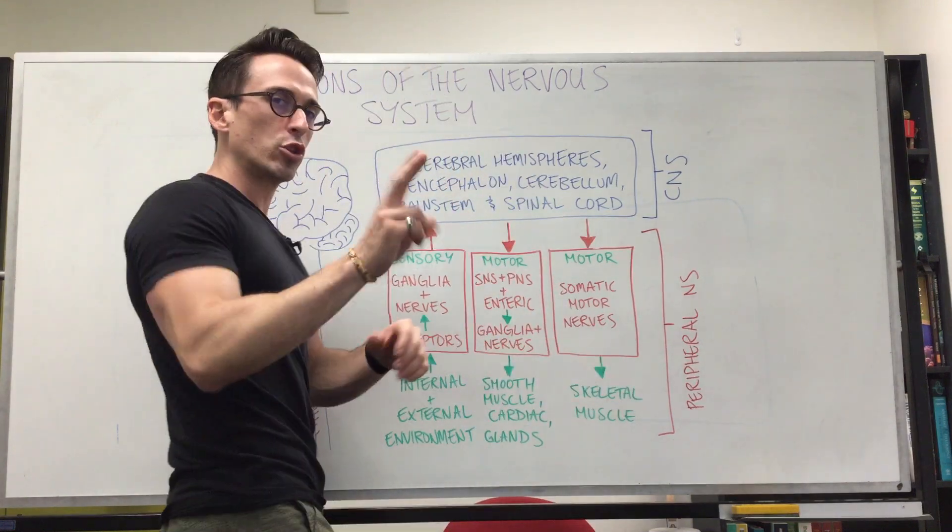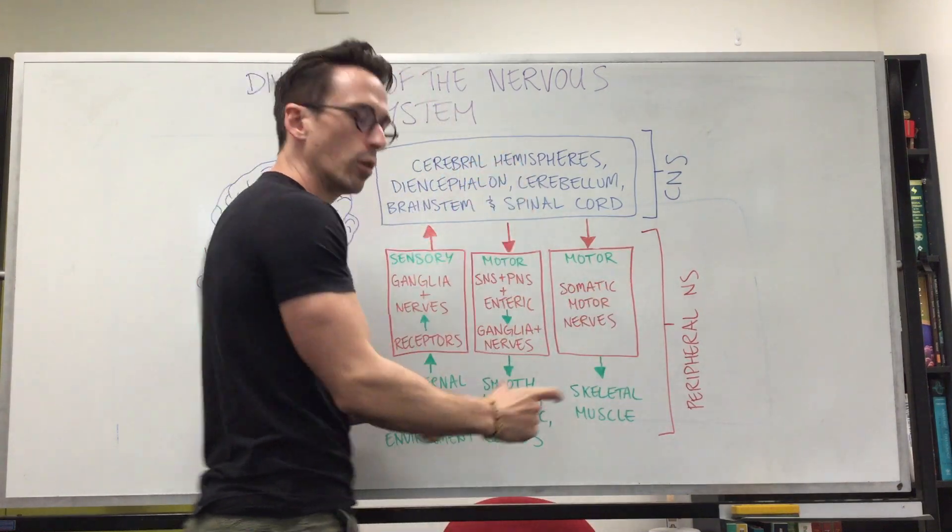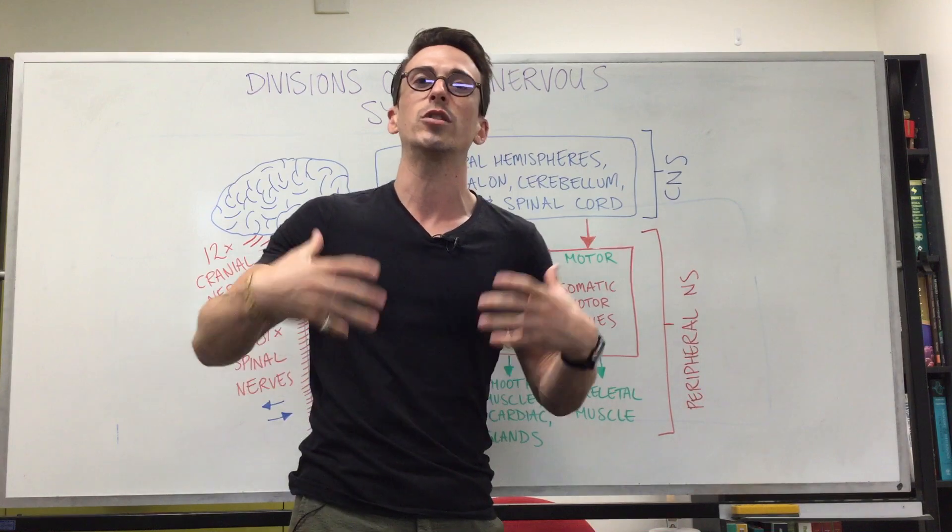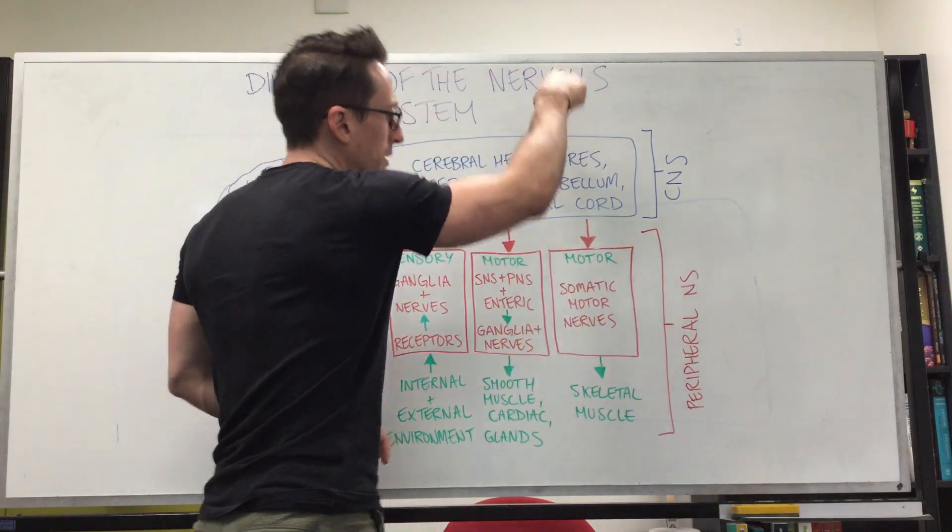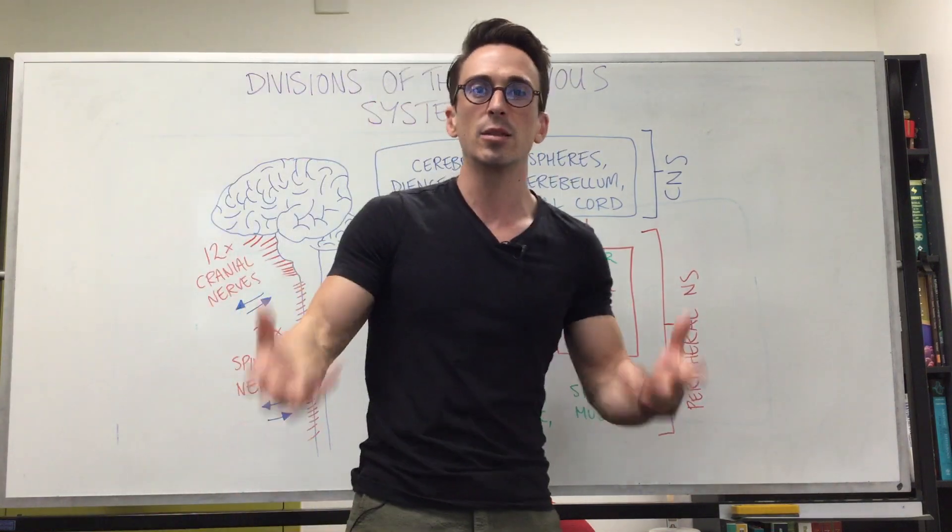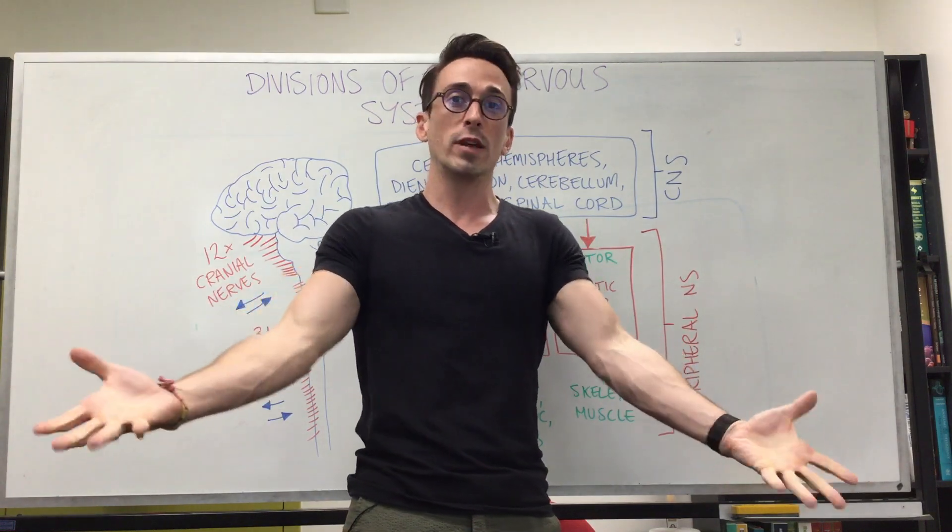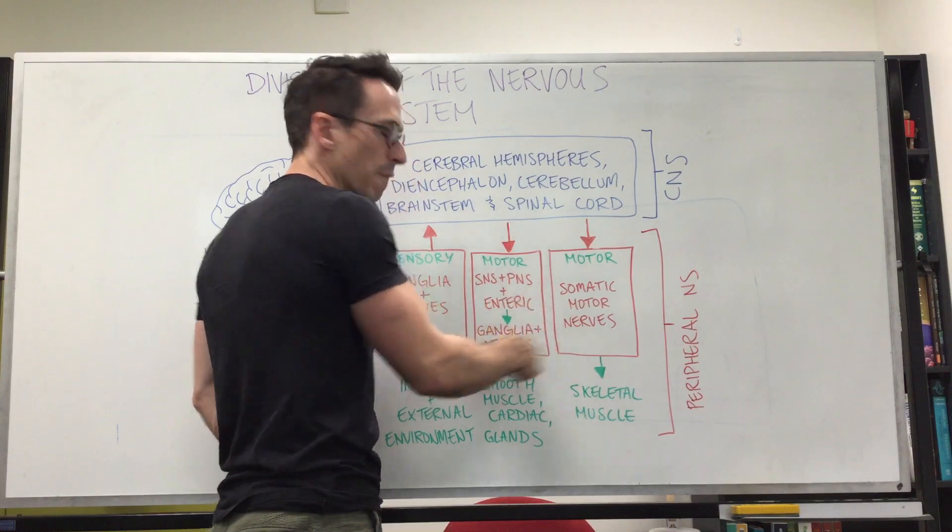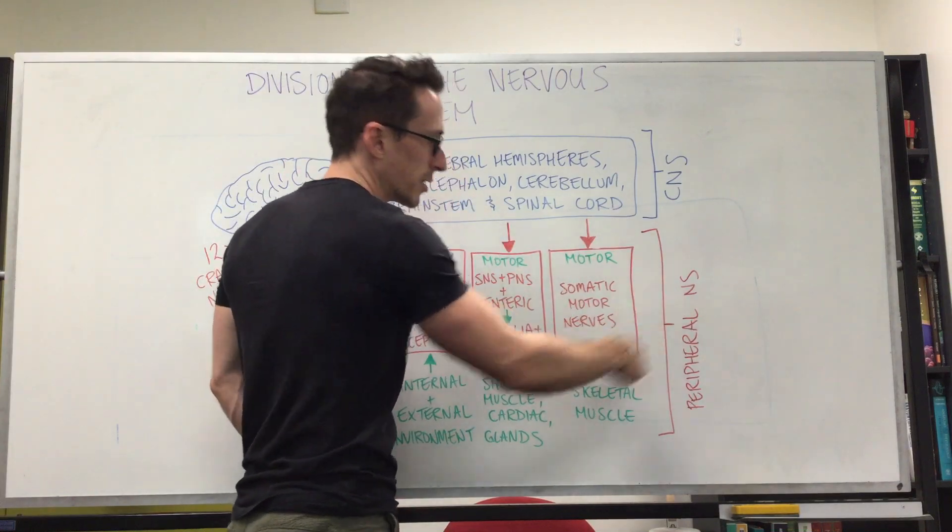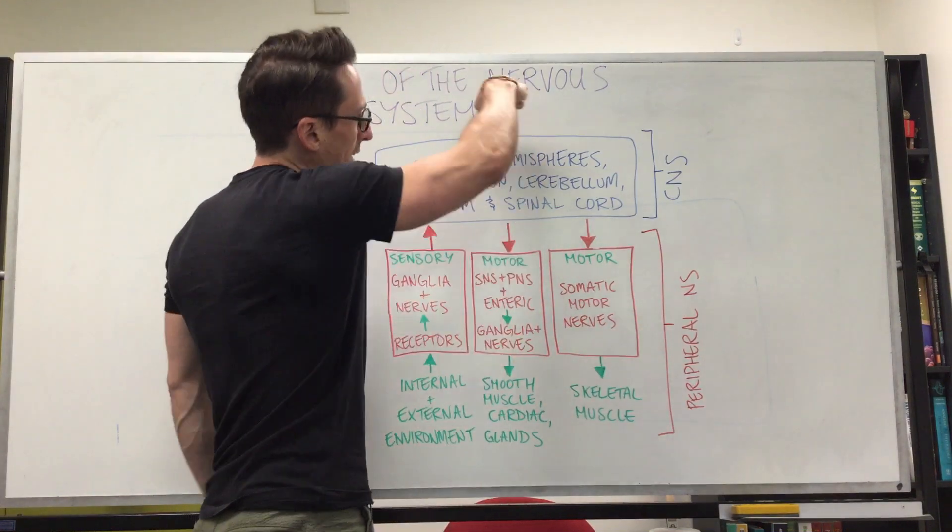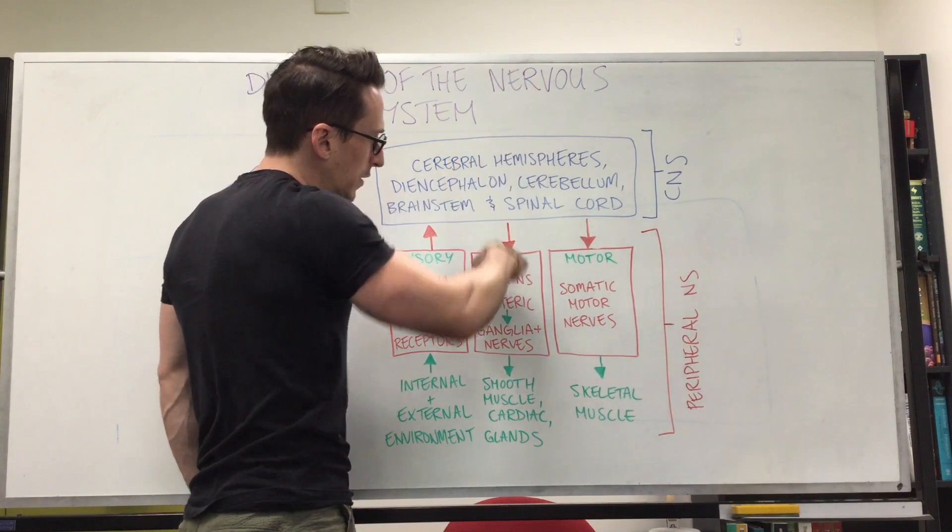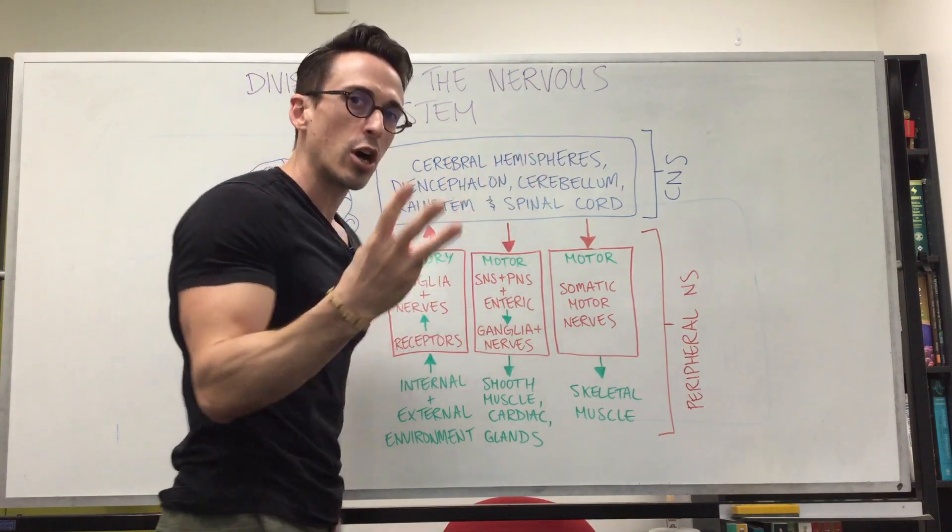When we look at motor output, we've got two major types: visceral and somatic. Visceral motor output refers to our organs. Somatic motor output, soma means body, is about our body moving around. One is unconscious, that's the visceral. The other is conscious, that's skeletal muscle. For the visceral, there are three major types of outputs.